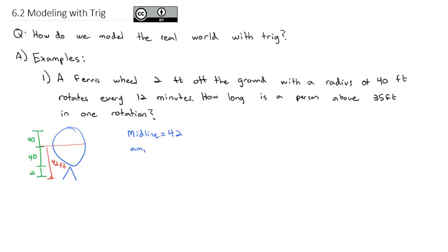The amplitude of the graph, it increases 40 and decreases 40 as it rotates around the circle. And the period of this graph we know is it's going to rotate every 12 minutes. We, therefore, from the period, know the B in our formula is going to be 2π divided by 12 or π over 6.